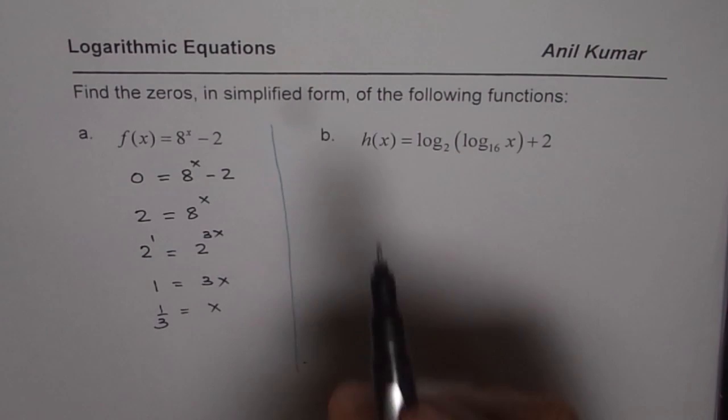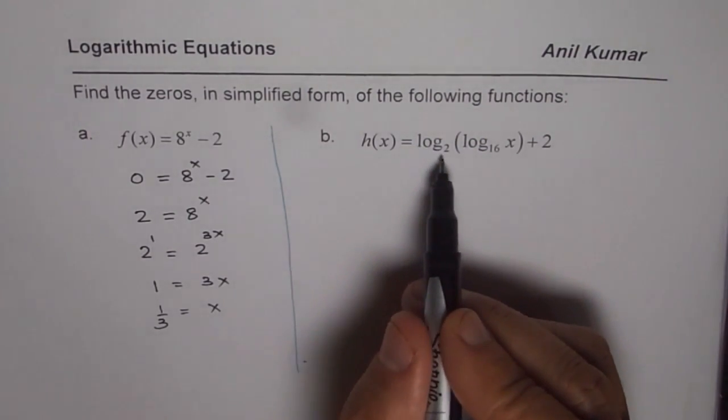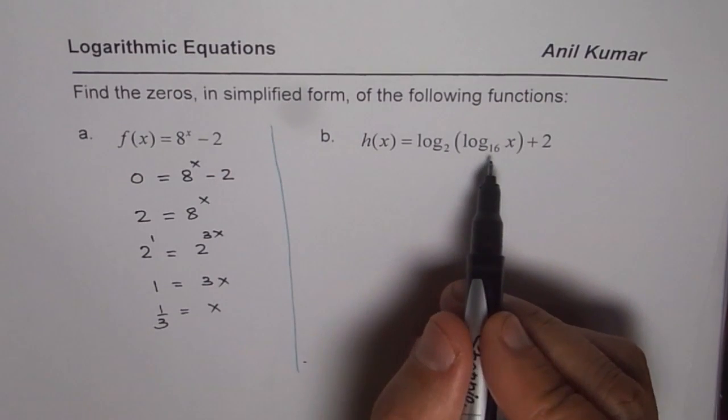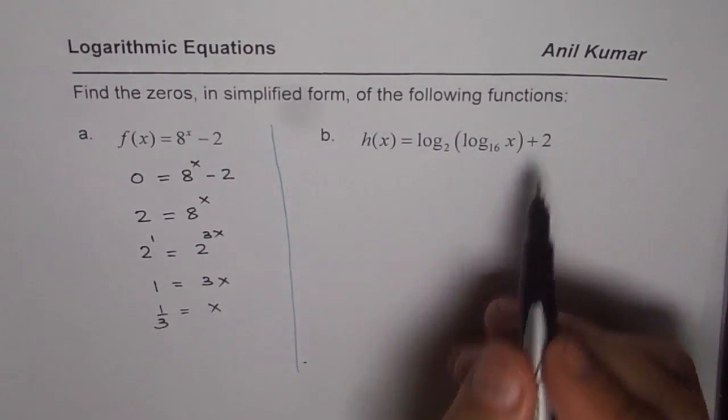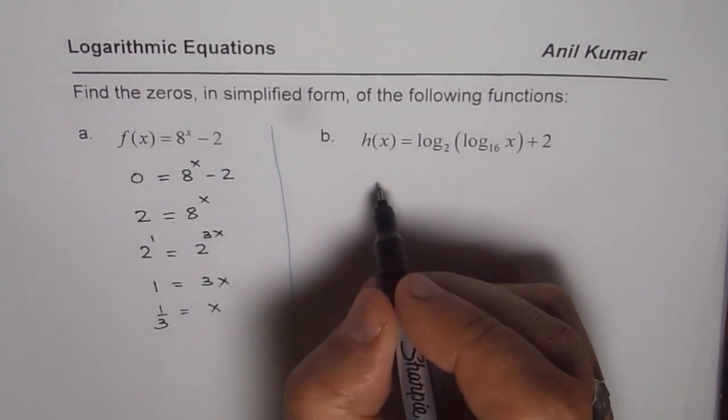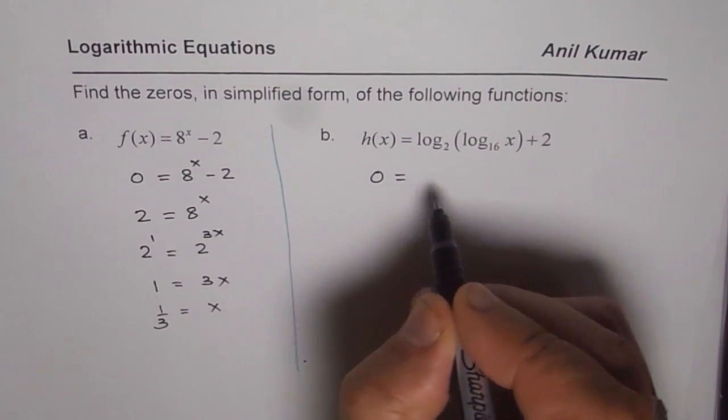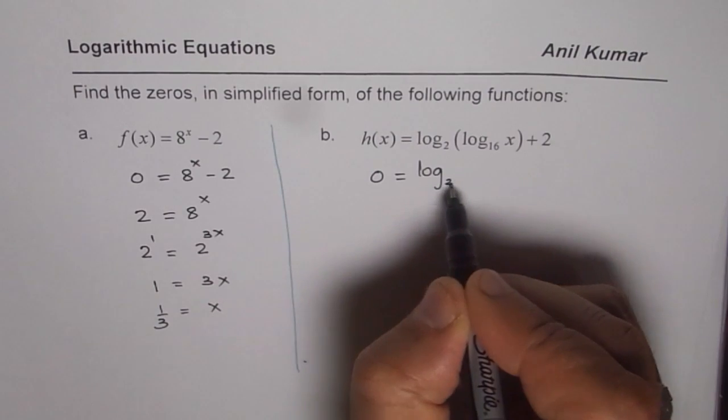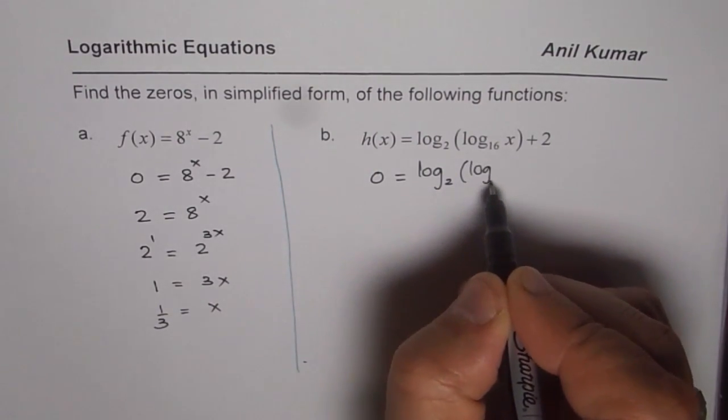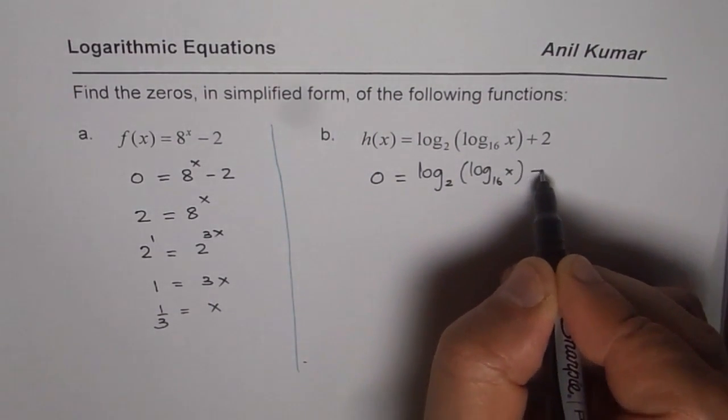Let's do the next one. h of x equals log to the base 2 of log to the base 16 of x plus 2. Zeros means h of x is 0. We get 0 equals log to the base 2 of log to the base 16 of x plus 2.